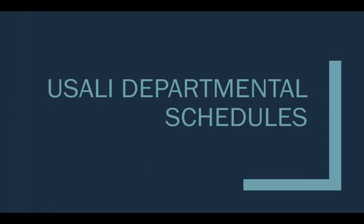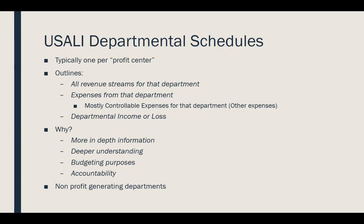There is typically one departmental schedule per profit center. A profit center is a department in a hotel that provides revenue. You'll sometimes see non-profit-generating departments also have a departmental schedule — they won't have any revenue, only expenses. For example, the administration and general department does not provide any revenue. Your sales and marketing team doesn't have direct revenue either; they bring in revenues for rooms, food and beverage, spa, or a golf course, but don't have their own revenue line.